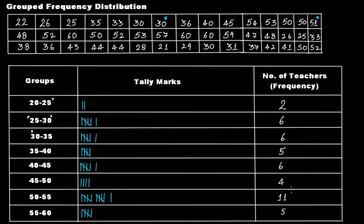The age group with the least number of teachers is 20 to 25 with a frequency of 2, and the maximum is 50 to 55 with a frequency of 11. In the next video tutorial we will discuss histograms, because the first step for a histogram is to form a grouped frequency distribution.